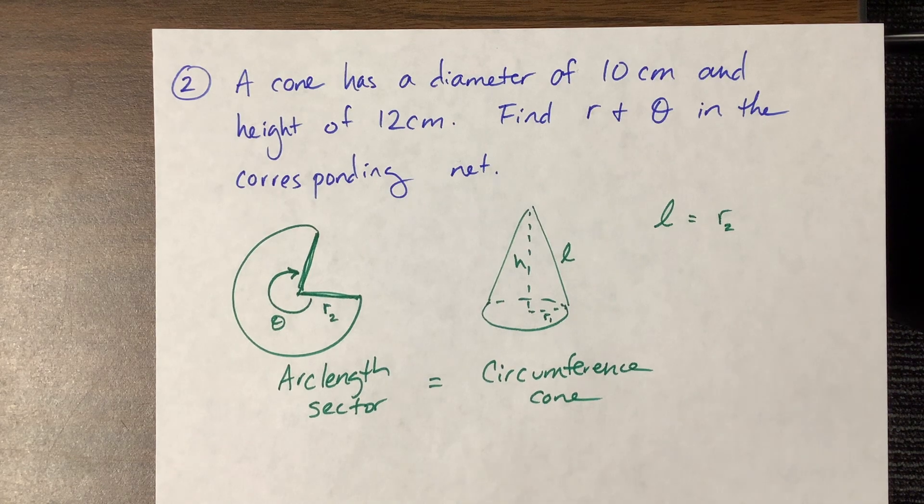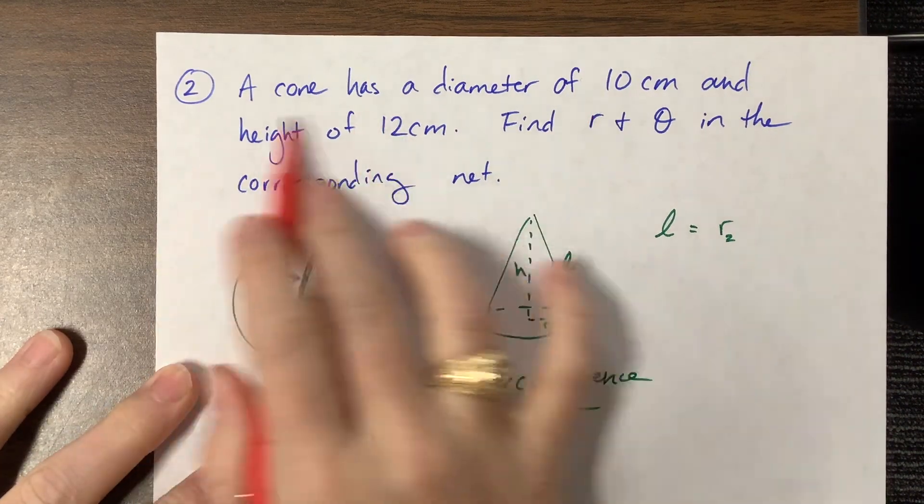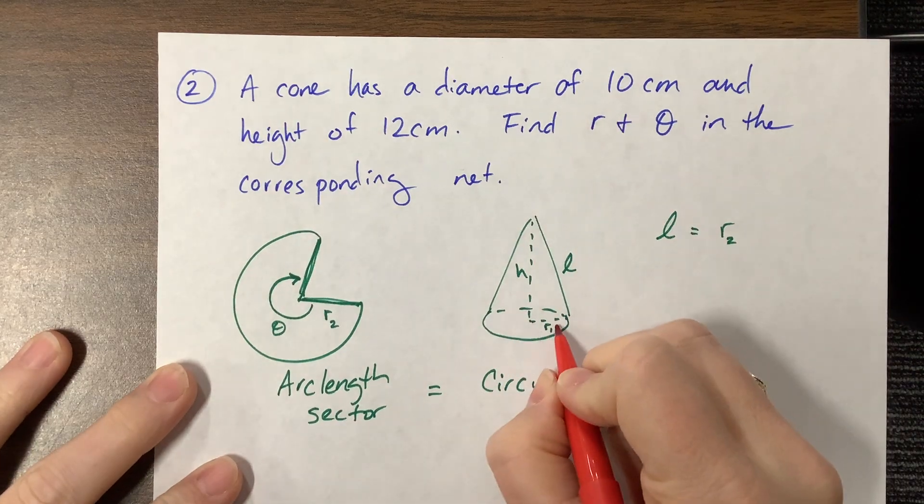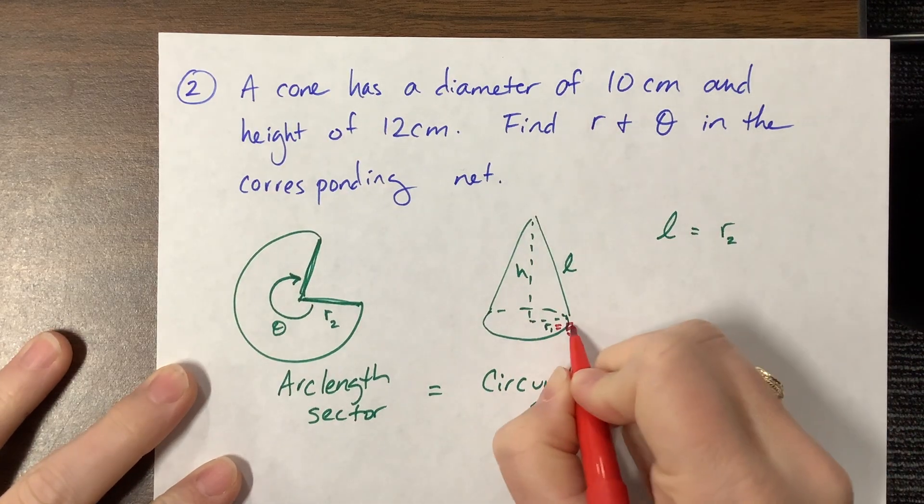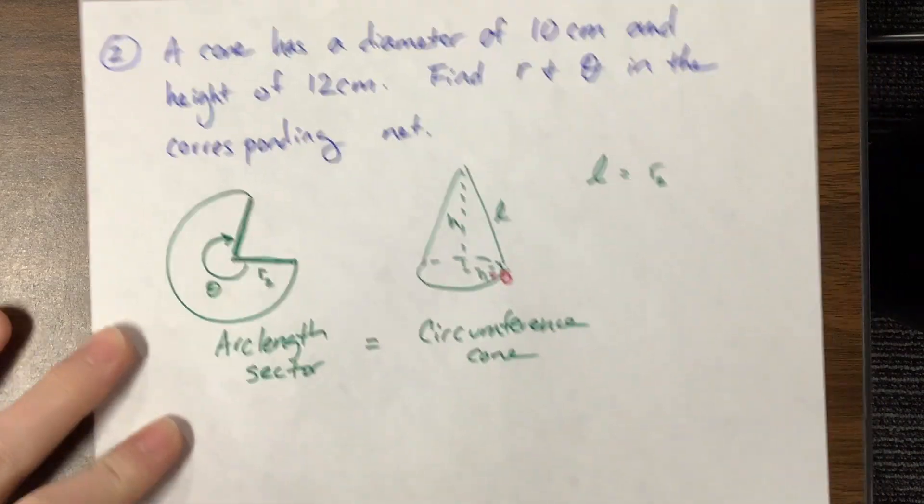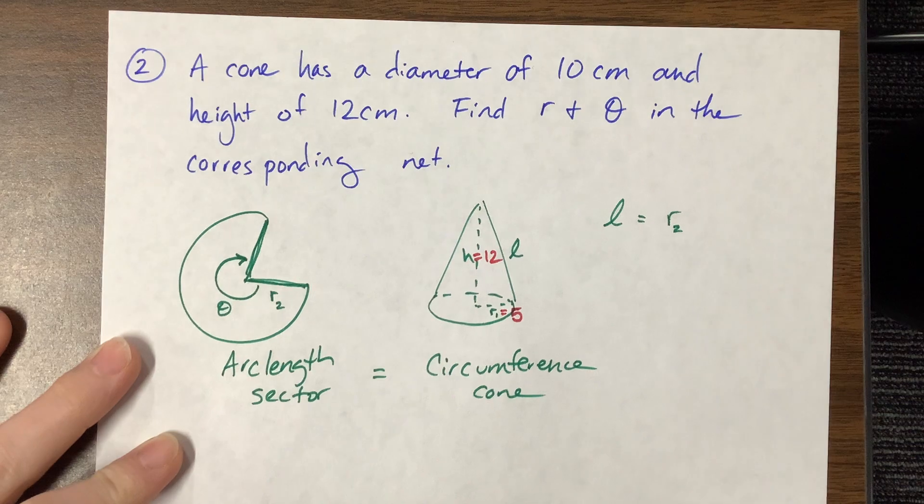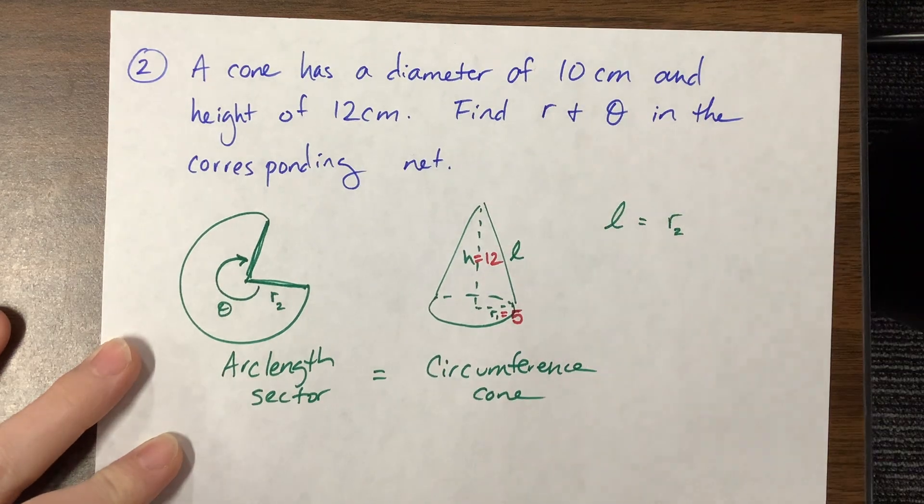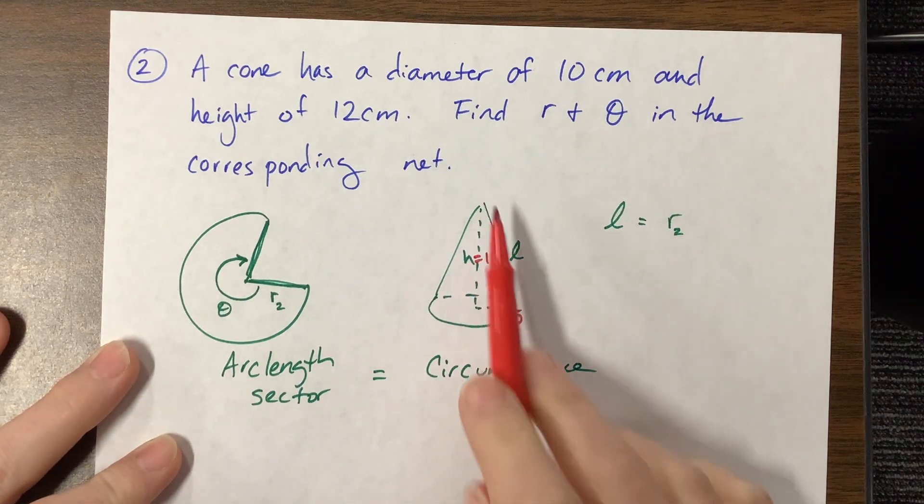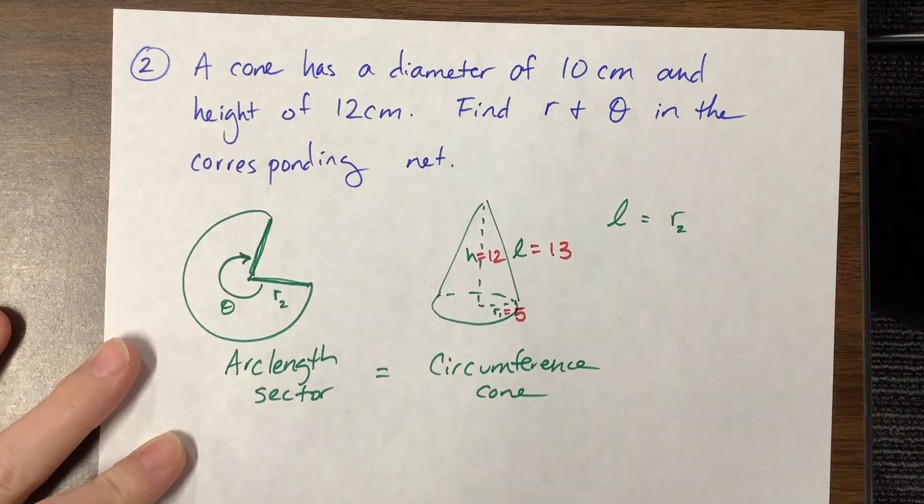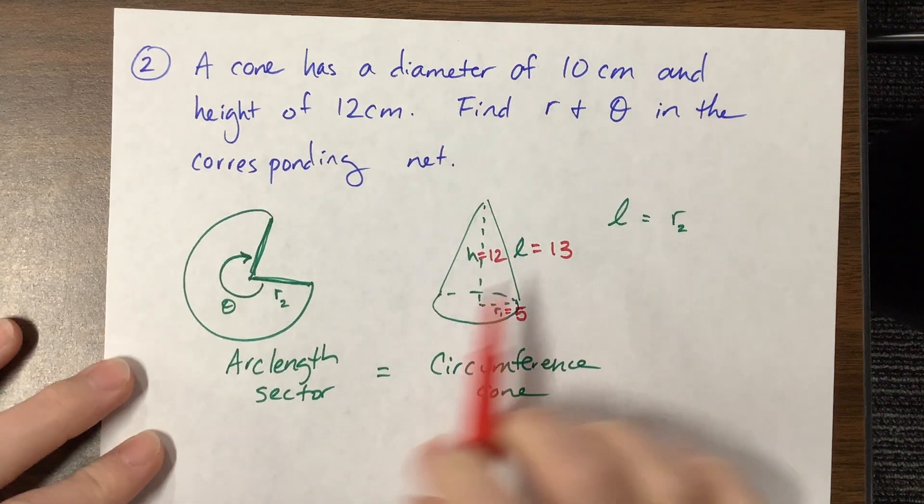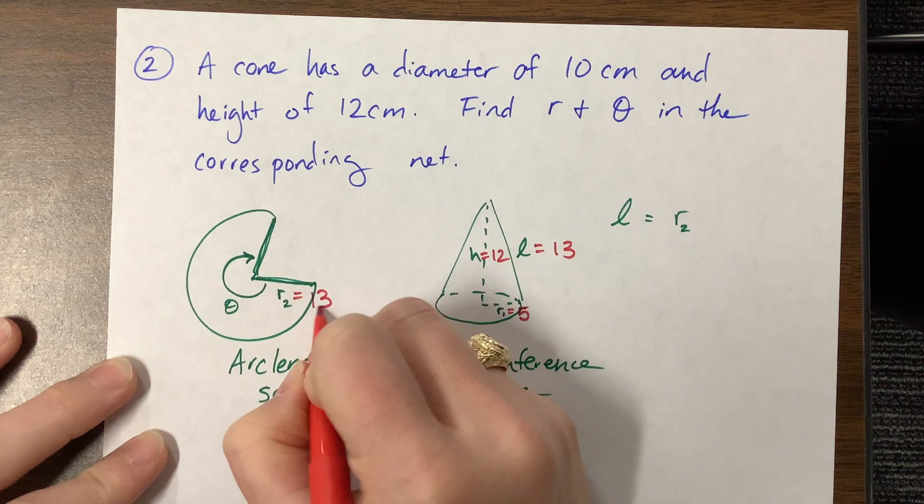they have told us that the diameter of the cone is 10, which means that its radius right here is equal to 5. And then they tell us that the height of the cone is 12. And I did this on purpose, I don't know if the numbers are going to be great. But at least we get a nice number here, because this is a 5, 12, 13 triangle. And I did that on purpose. Which means if this is 13, that means over here, this is equal to 13.